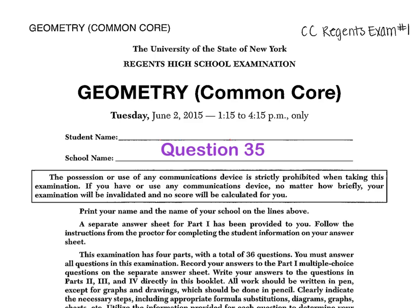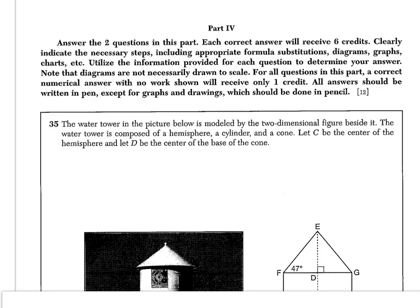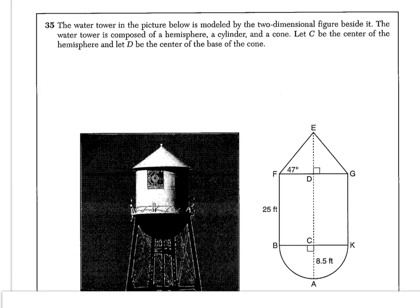This video will cover the Geometry Common Core exam from June 2015, question 35. Question 35 is about a water tower that's pictured below. So I'm just going to scroll up so we can see it.